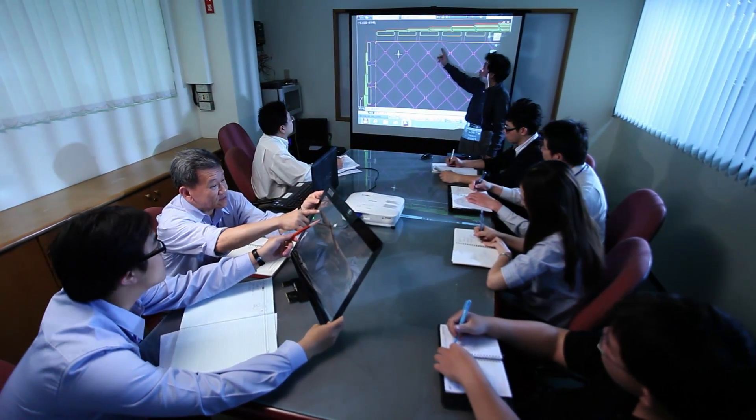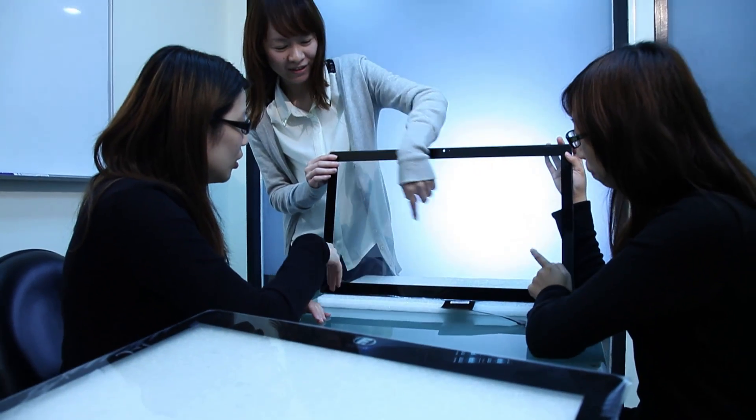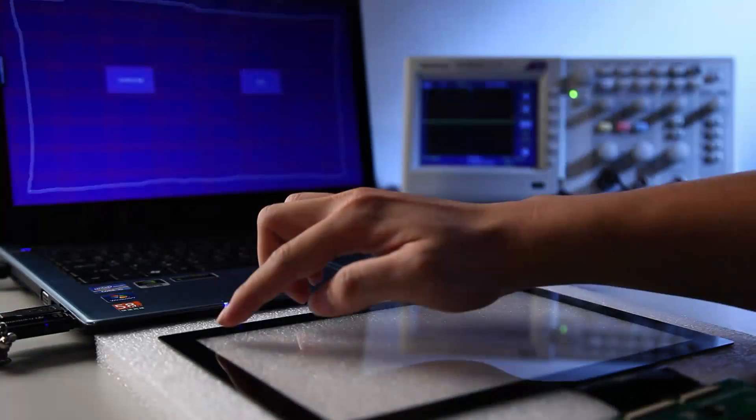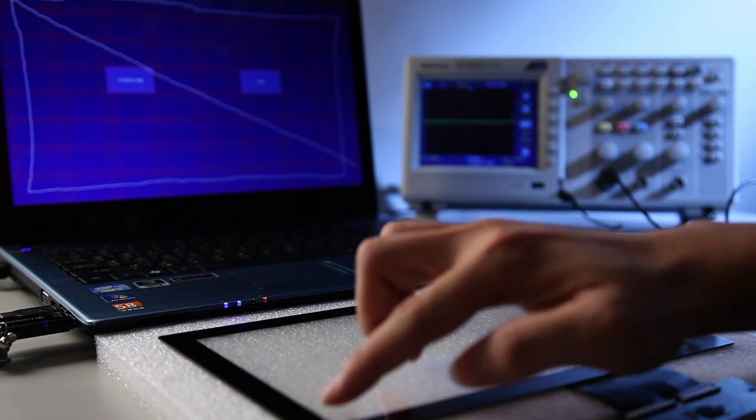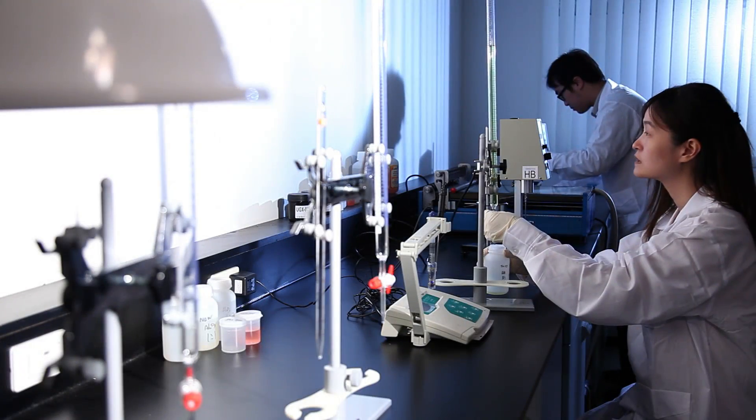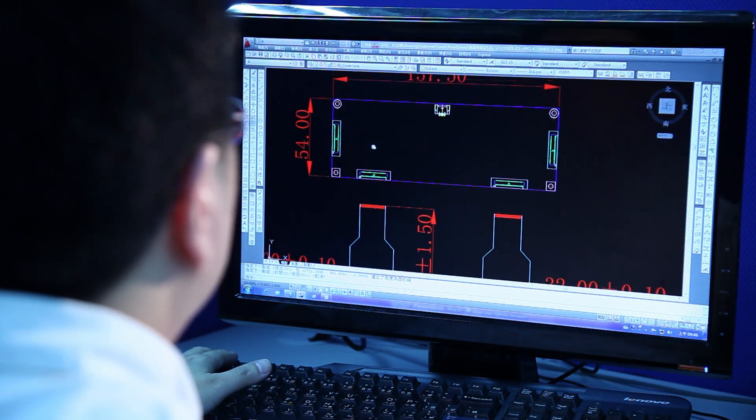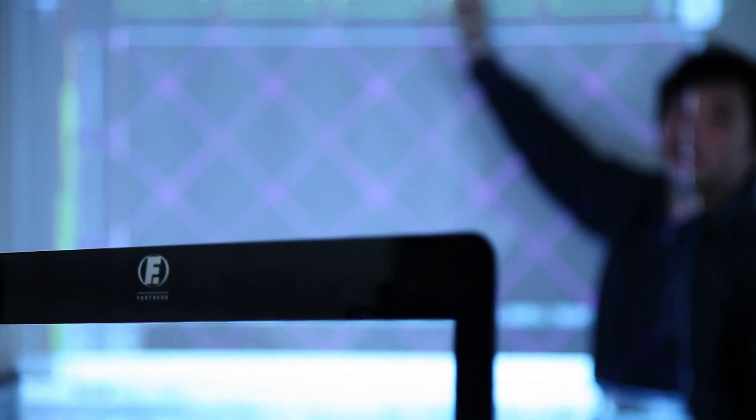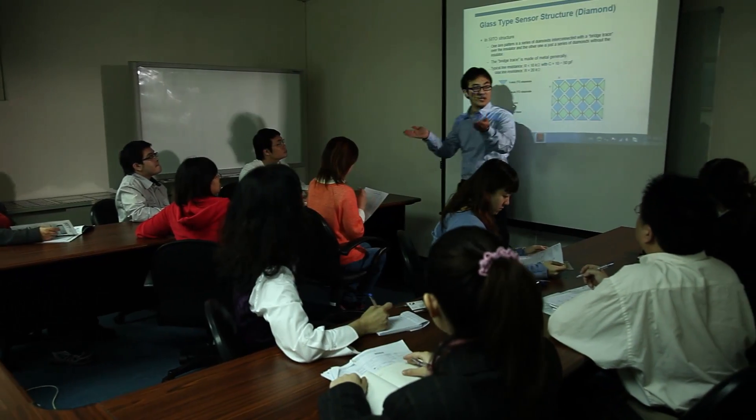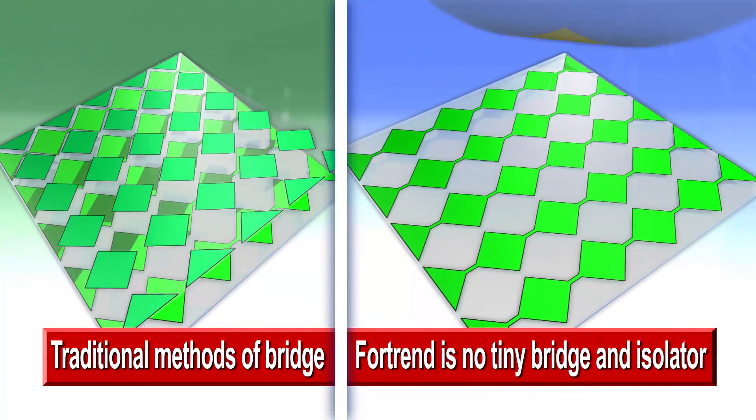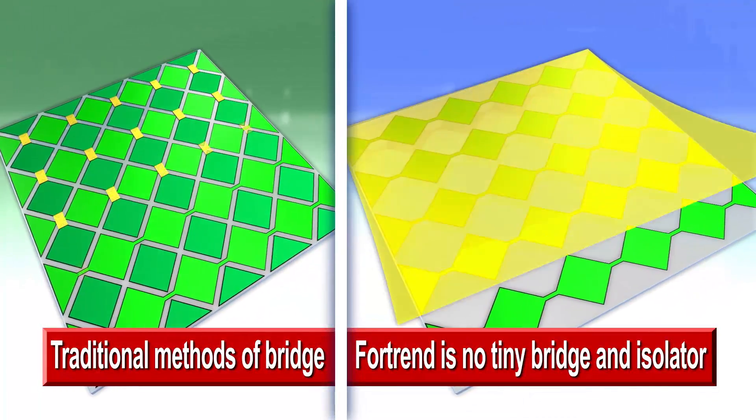Our R&D team has well-experienced expertise engineers keeping on working in an innovative way. Starts from raw material to structure and new process methodology in creating a better and efficient production. The Fortran OGS design has a very unique point.